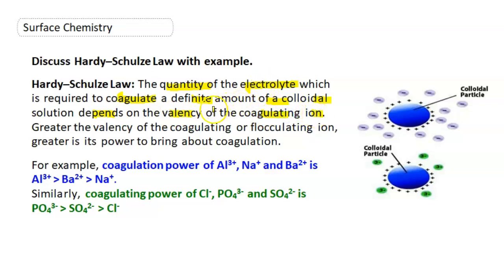Coagulating power depends upon valency of a coagulating ion. Greater the valency of the coagulating or flocculating ions, greater is its power to bring about coagulation.